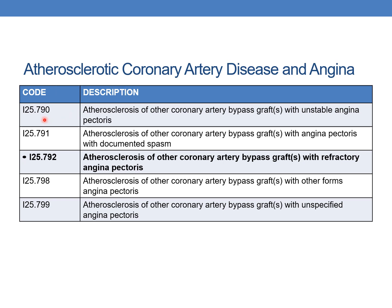Under I25.79 series (other coronary artery bypass grafts): I25.790 — with unstable angina pectoris; I25.791 — with angina pectoris with documented spasm; I25.792 — with refractory angina pectoris (new code); I25.798 — with other forms of angina pectoris; I25.799 — with unspecified angina pectoris.